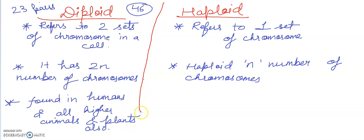All body cells are plants and animal cells, and all higher animals are diploid.